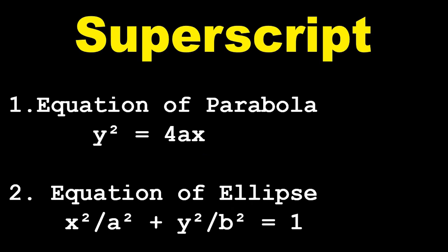First of all, if you want to write the equation of a parabola or an ellipse, then you need to write something as 'to the power', like y² = 4ax, or x²/a² + y²/b² = 1. How do you achieve this via Python — like 2 raised as a power of y, or x to the power n in the binomial equation, or permutation and combination notation like nCr or nPr?